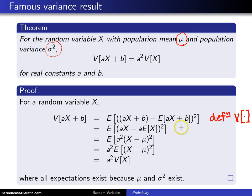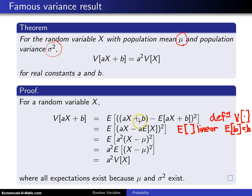The next step uses two things. First, the expected value operator is linear. That means the expected value of ax plus b can be split into the expected value of ax plus the expected value of b. Since b is a constant, the expected value of b equals b. So we have b here and b here, meaning b minus b equals zero.